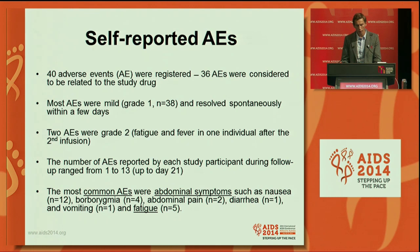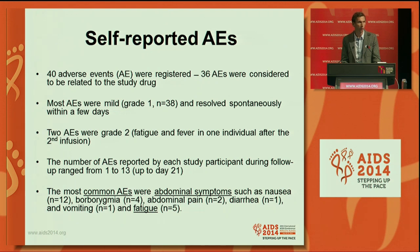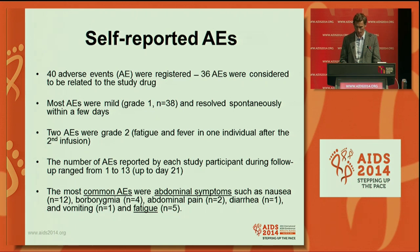Here are the first results regarding safety — these are self-reported adverse events. Altogether, we recorded 40 adverse events during the three infusions in the six patients. Most were mild, grade one, and resolved spontaneously within a few days. Two adverse events were grade two, occurring in the same individual after the second infusion — fatigue and fever — also resolving within two to three days. The number of adverse events per participant ranged from one to 13. As is well known with romidepsin, the most common side effects were abdominal symptoms and fatigue.